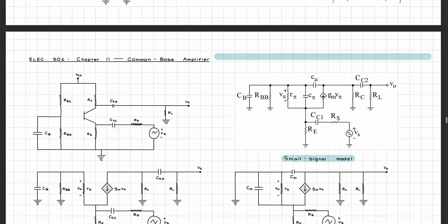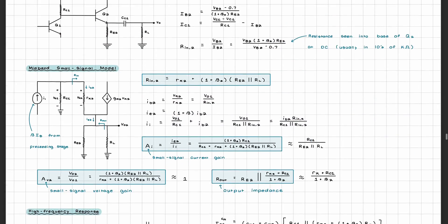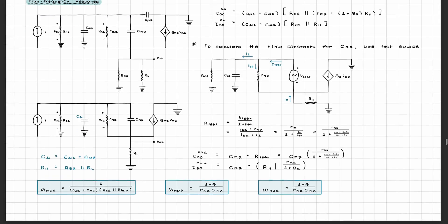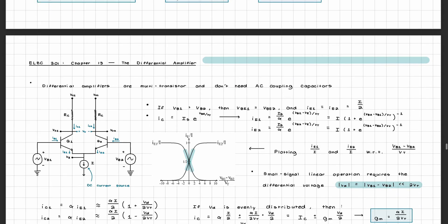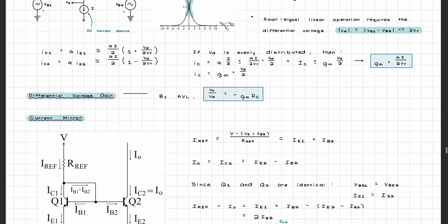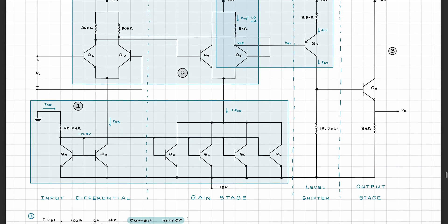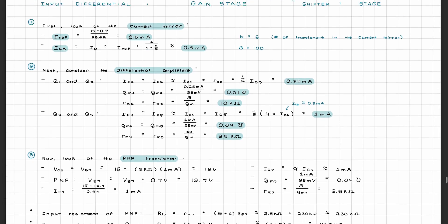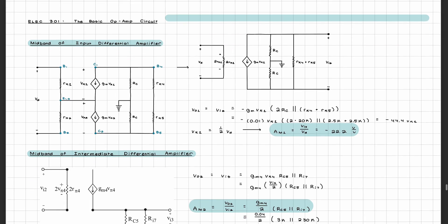In the third unit we built upon the second unit by covering the frequency response for a common collector amplifier, how a differential amplifier works and what the frequency response is like, what the inside of an op amp actually looks like, and the non-idealities of an op amp.